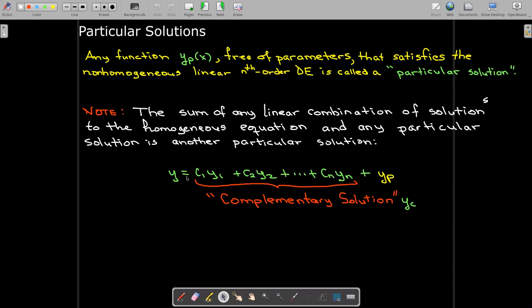Now we call this solution to the homogeneous equation, remember we're going to pick some c1 through cn, a complementary solution. It's not the complementary solution.